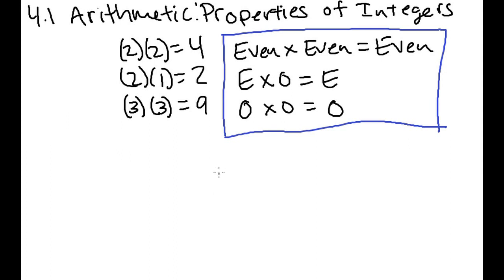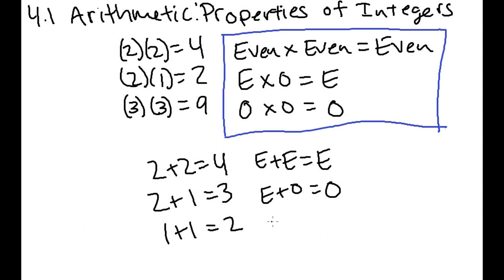And then the other thing we need to know is how they add and subtract. So if you have 2 plus 2, that gives you 4. If you have 2 plus 1, that gives you 3. And then if you have 1 plus 1, that gives you 2. So here we had an even plus an even, which equaled an even. Here we have an even plus an odd, which equaled an odd. And then here we had an odd plus an odd, which equaled an even.